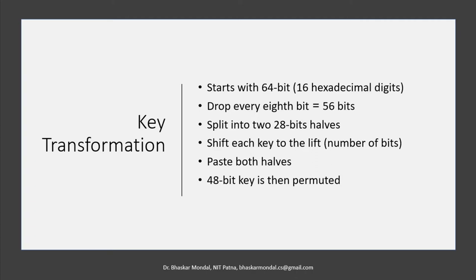Regarding key transformation: you start with a 64-bit key — you can think of it as 16 hexadecimal digits, since each hex digit is represented by 4 bits, so 16 × 4 = 64 bits. Then you drop every 8th bit, leaving you with 56 bits. This 56-bit key is split into two 28-bit halves. Then each key half is left-shifted; in which round and how many left shifts happen is predefined. The two halves are combined to give a 48-bit key, which is then permuted again.